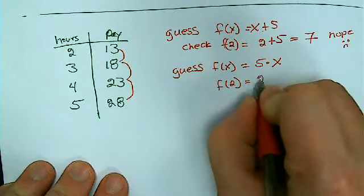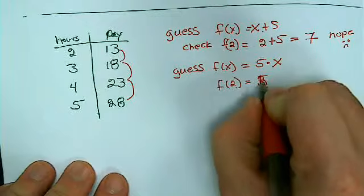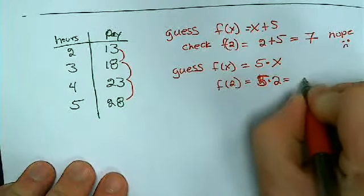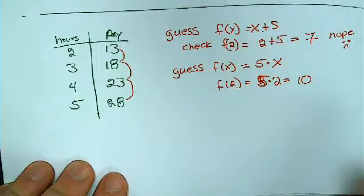Let's see, 2 times 5, let me write it correctly. 5 times 2 gives me 10. Shoot, that didn't work.